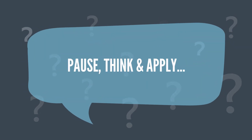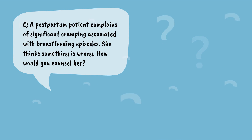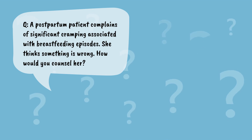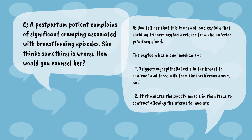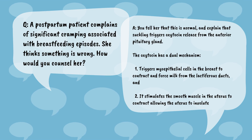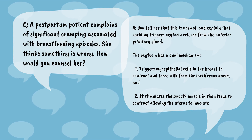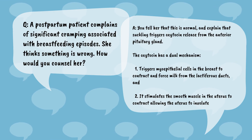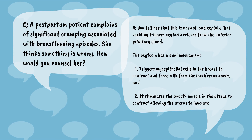Now let's pause, think, and apply. A postpartum patient complains of significant cramping associated with breastfeeding episodes. She thinks something is wrong. How do you counsel her? You tell her that this is normal and explain that suckling triggers oxytocin release from the anterior pituitary. The oxytocin has a dual mechanism: it triggers myoepithelial cells in the breast to contract and force milk from the lactiferous ducts, and it stimulates the smooth muscle in the uterus to contract, allowing the uterus to involute.